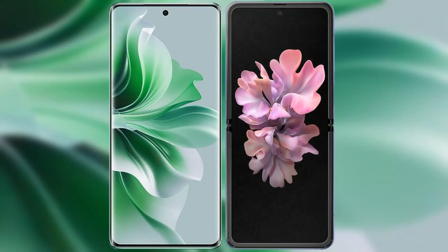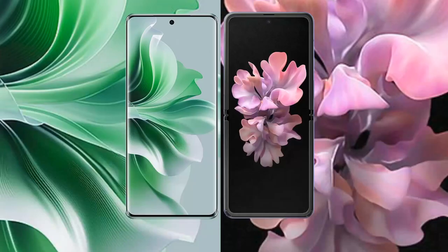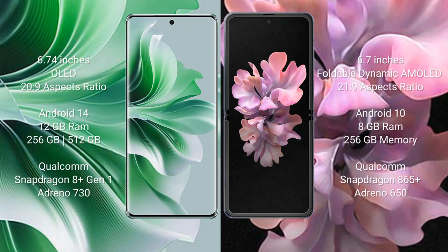I will compare the new Oppo Reno 11 Pro with Samsung Galaxy Z Flip. Oppo Reno 11 Pro comes with a 6.74 inches OLED display and aspect ratio 26 to 9. Samsung Galaxy Z Flip comes with a 6.7 inches foldable dynamic AMOLED display and aspect ratio 21 to 9.